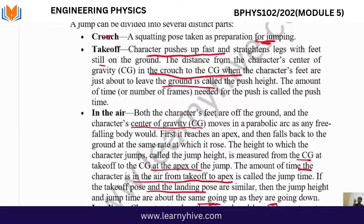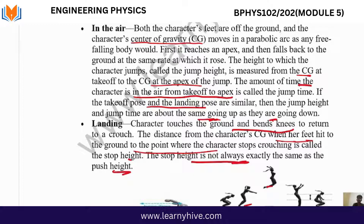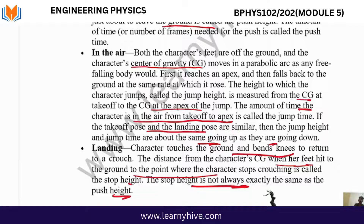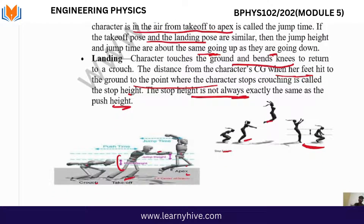To summarize: the four parts are crouch, takeoff, in the air, and landing. During crouch, the character prepares for the jump. During takeoff, the character pushes up and straightens the legs. At this stage we get the push height and push time. In the air, we have the jump height measured from takeoff to apex. For landing, we have stop height and stop time.